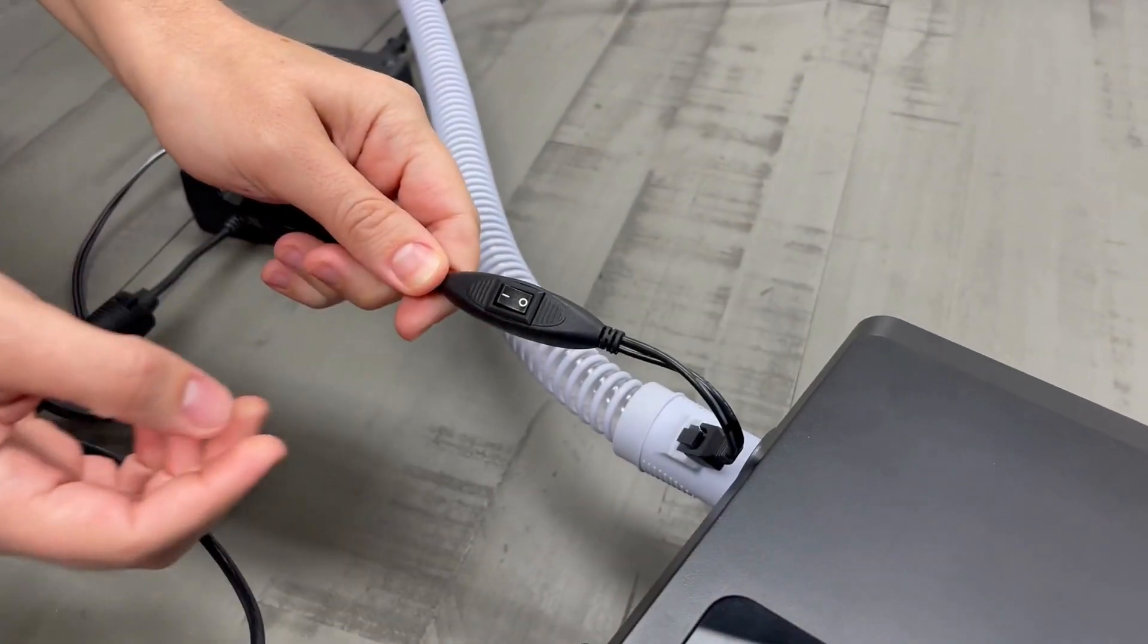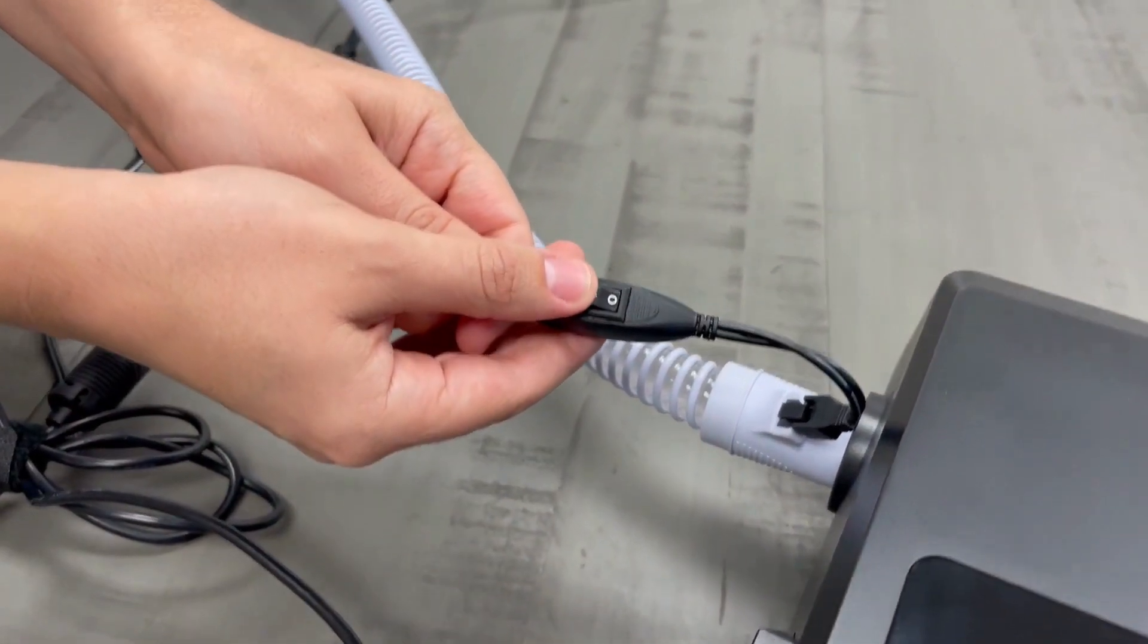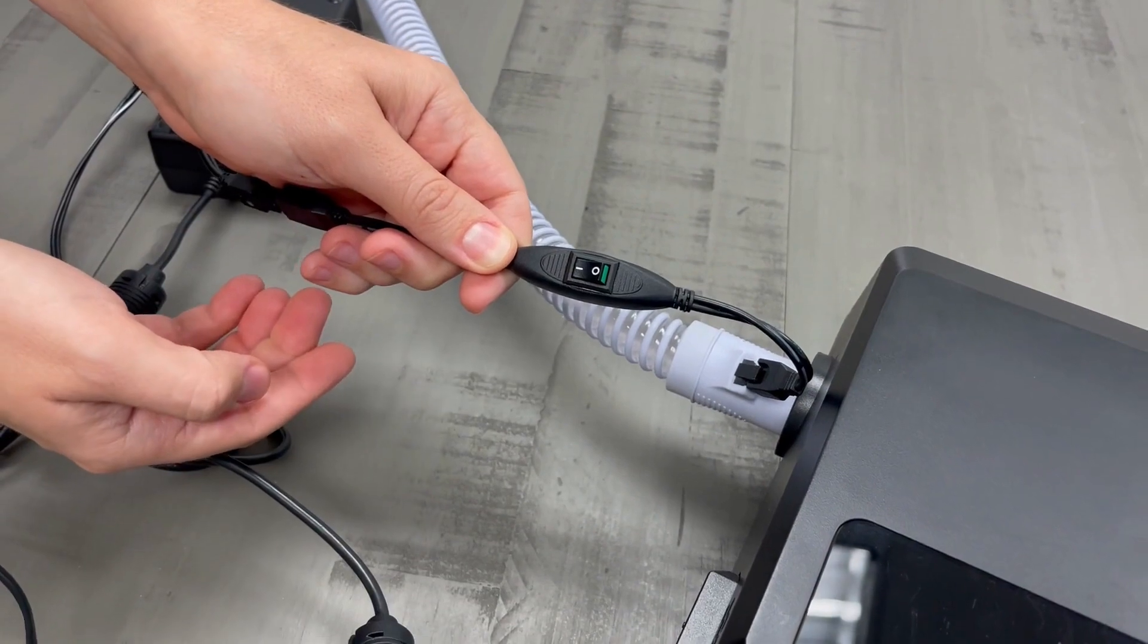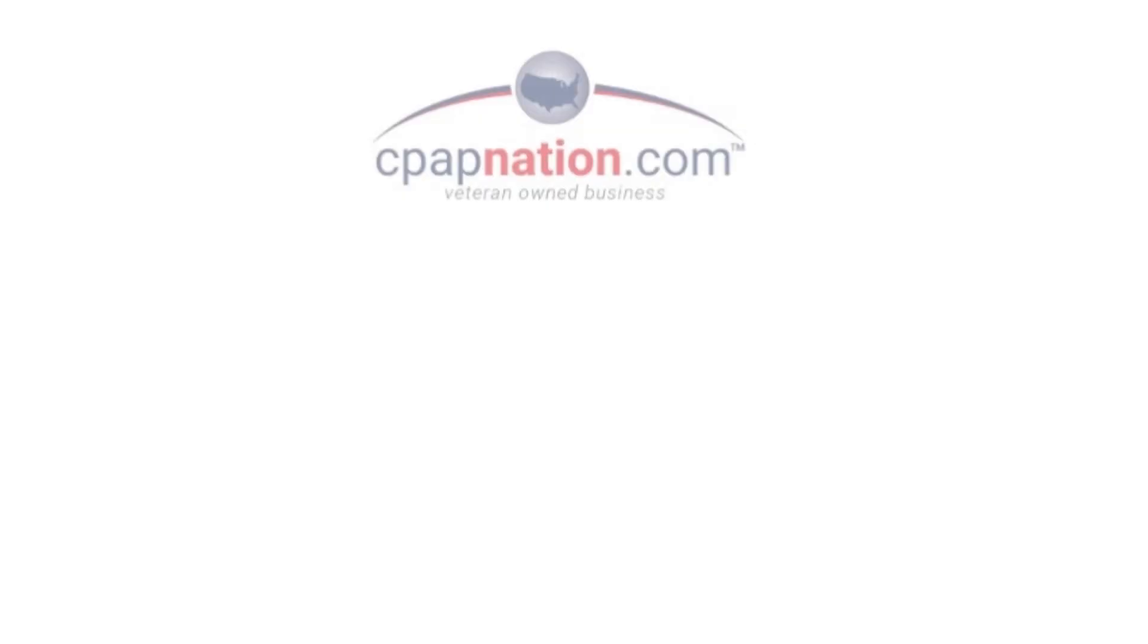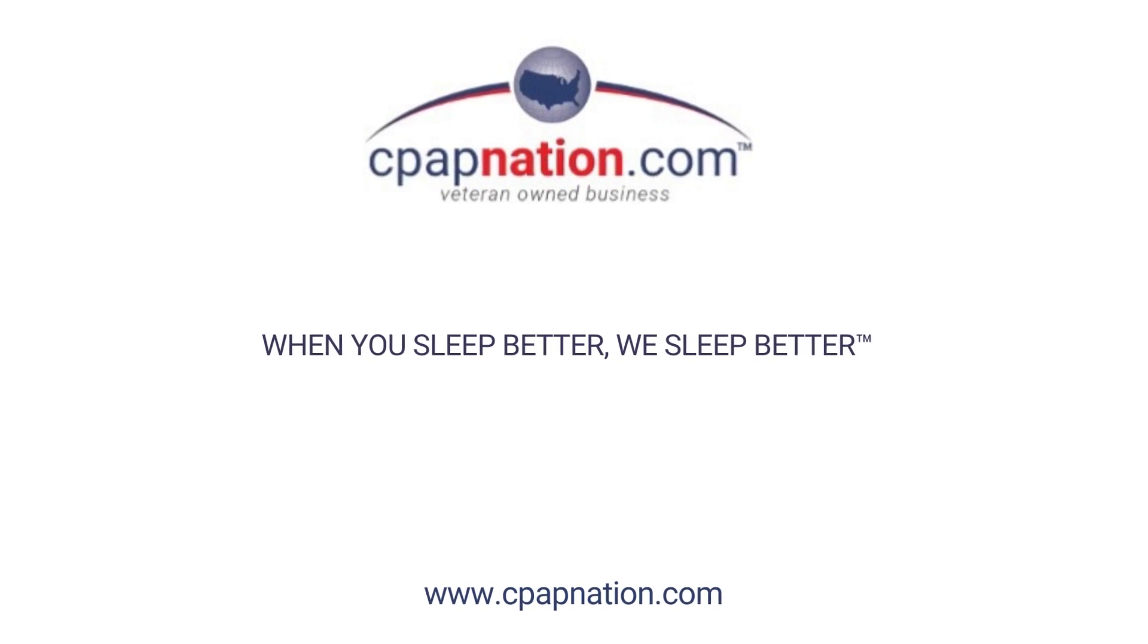Use the toggle switch to turn the heat feature on and off as needed. Make sure the power to the tubing is turned off when not in use. Now you are all set up and ready to go.